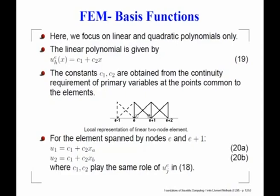For example, a typical sub-domain is encapsulated between node E and E plus 1. We try to fit a linear function between these two points by a linear function. What we need to do is find out C1 and C2, at the same time ensuring continuity of the structure across the nodes. We always want that this polynomial is constructed such that at node E and E plus 1, there would be absolute continuity of the value.